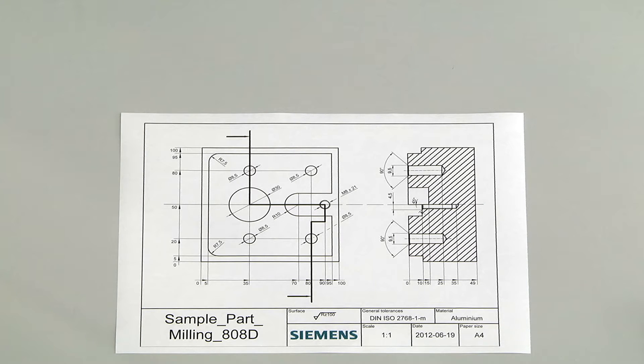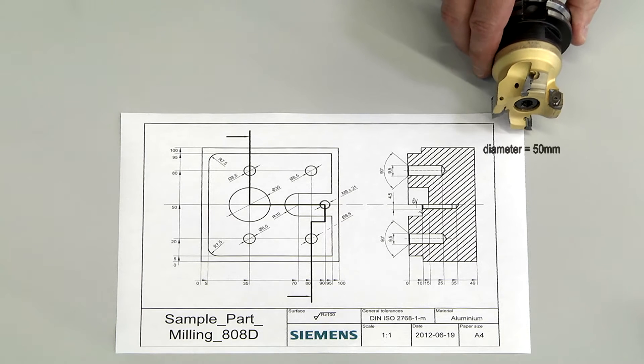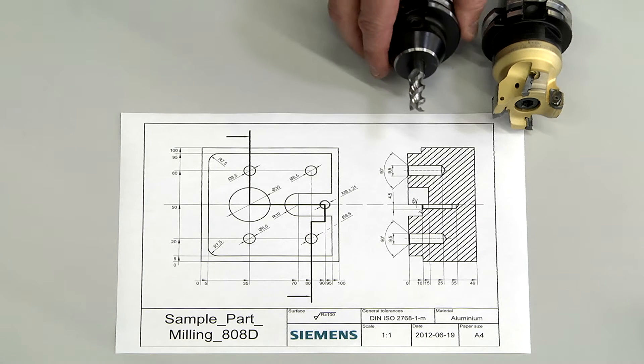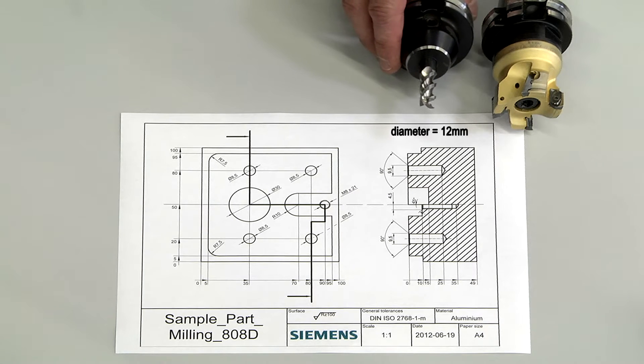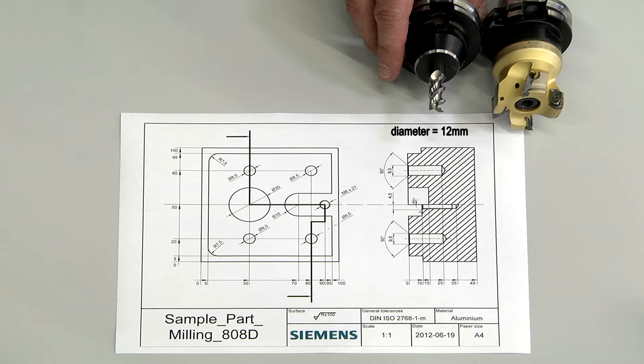In our case we use a milling cutter with a diameter of 25mm for face cutting, and an end mill with a diameter of 12mm for contour and circular pockets.